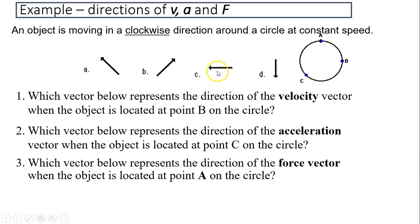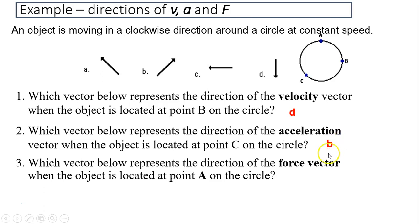Let's look at an example. An object moves clockwise from A to B to C at a constant speed. Which vector represents the velocity at point B? Since velocity is tangent to the circle and the motion is clockwise, the answer is D — the only vector tangent to the circle. Which vector represents acceleration at point C? Acceleration is centripetal, meaning toward the center, so the answer is B. Which vector represents the force at point A? Centripetal force points toward the center, so the answer is D.